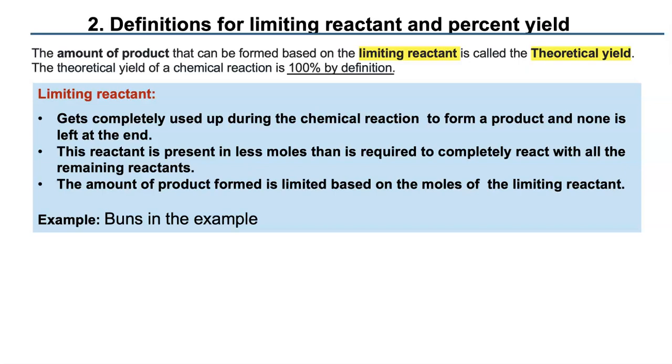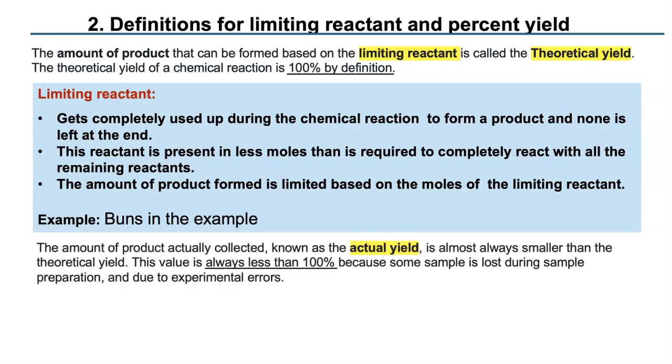In our previous example, it was the hamburger buns. That was the limiting reactant. The amount of product actually collected at the end of the reaction when you clean it up is known as the actual yield. For example, let's go to our hamburger example. Say you made two hamburgers. Every time you make two hamburgers, you have a naughty German Shepherd dog who's a greedy hog. He eats half of that. So your actual yield is not two hamburgers. It's going to be one and a half hamburgers. Does that make sense?